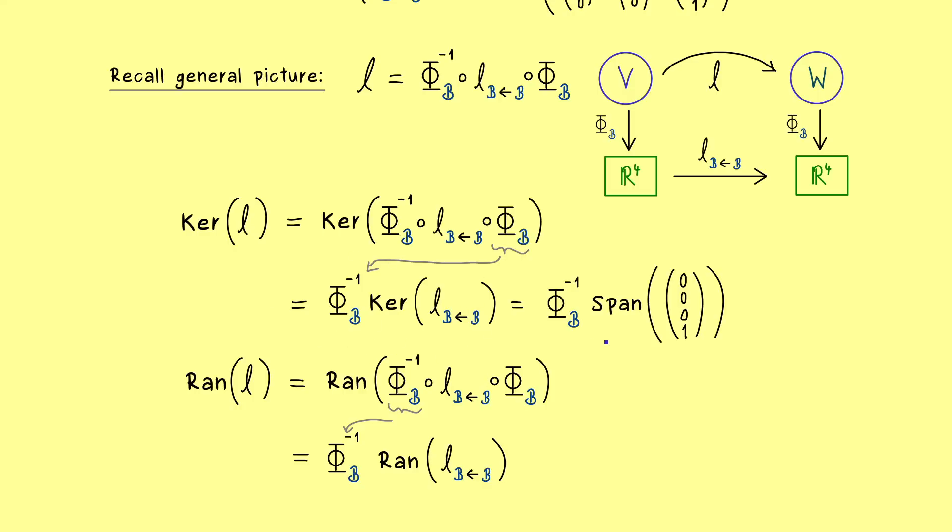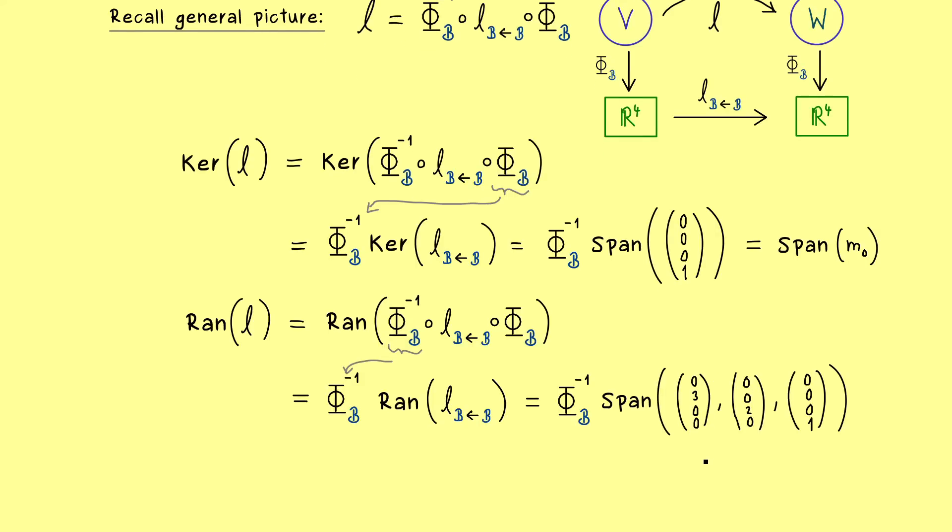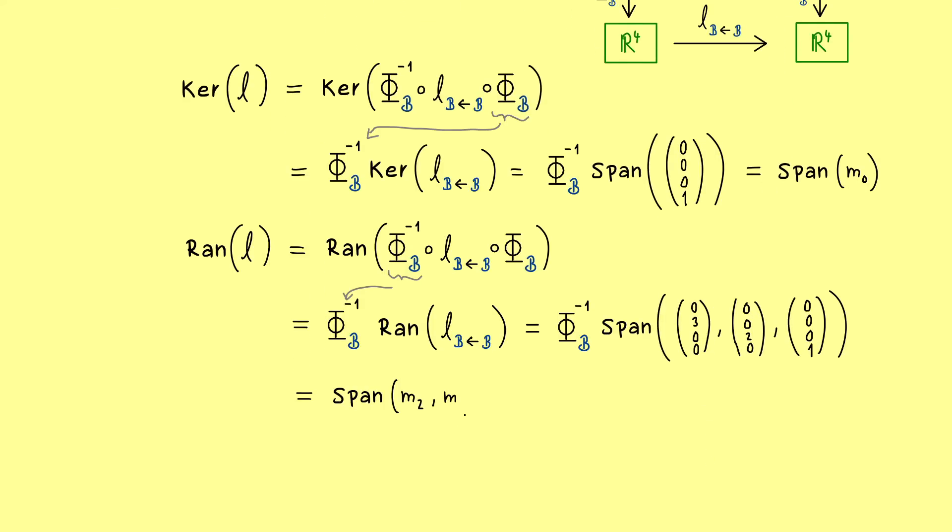So let's start with the kernel and there we only have the question what does this vector in R4 represent in V. And our basis isomorphism tells us that this one is M0. In other words all constants in the polynomial space give us the kernel of L. Very well and now we can do exactly the same thing with the range of L. There we have to transform three vectors but we also see it's not hard at all because it's simply M2, M1 and M0. To be fair we actually have constants in front of the vectors but they don't change the span at all. Hence we can simply write the range of L is given by the span of M2, M1 and M0. And again you can check that the rank nullity theorem is satisfied so the dimensions of the two spaces fit together.